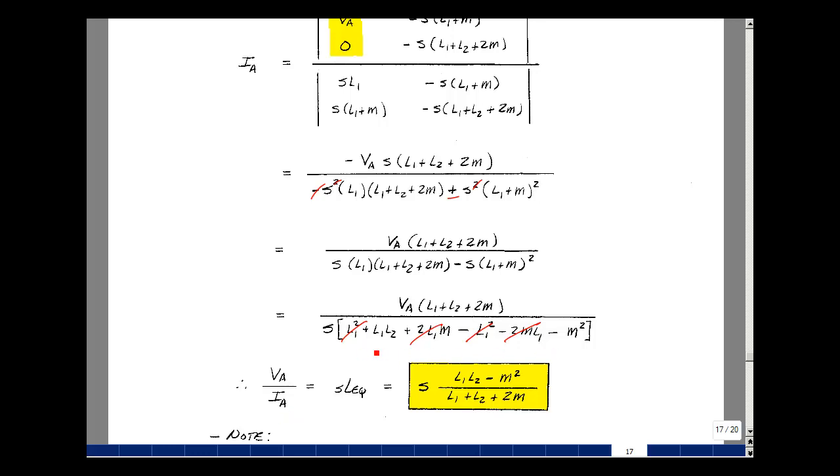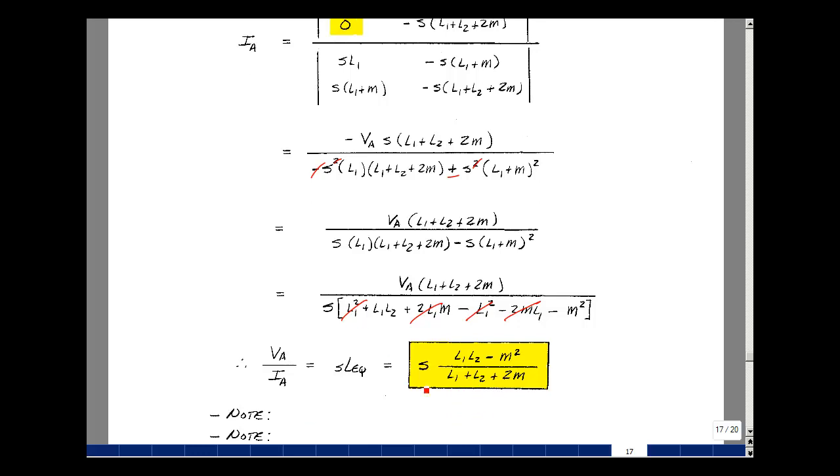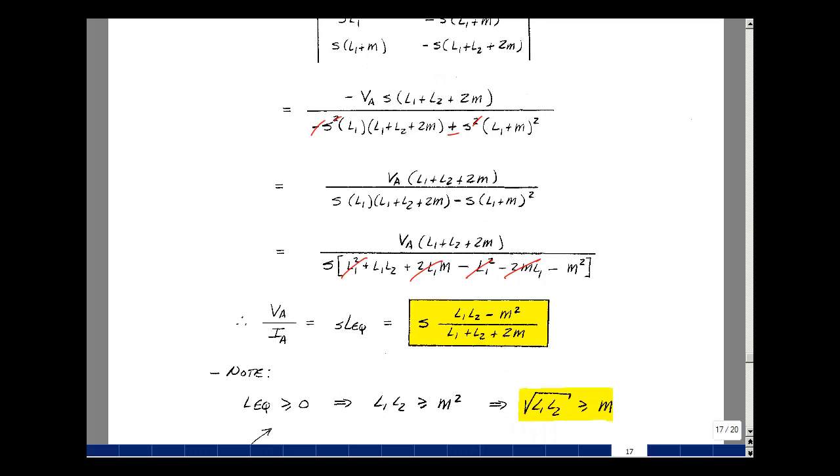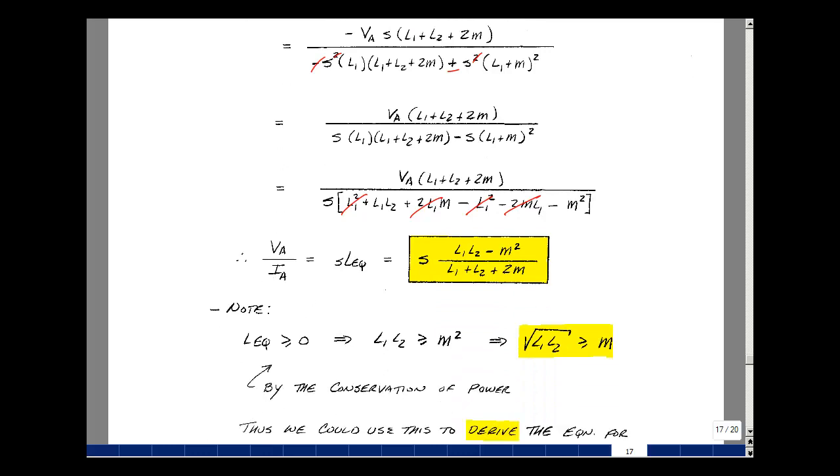So if I take V sub A divided by I sub A, take the reciprocal of this denominator and divide it by this. So I've got L1 L2 minus M squared divided by L1 plus L2 plus 2M. And I have an S out here in front. So that's the input impedance to my circuit. By the conservation of power, I can't have a negative input impedance. In other words, I'll be generating power without a source.